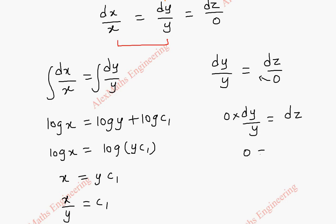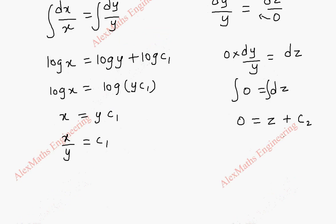Totally this is 0. On integrating both sides, this becomes 0 equal to z. And let's take a constant c2. Taking this c2 to the other side, we get minus c2 equal to z.